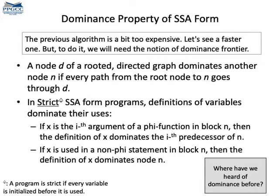A strict program is a program in which every variable is defined before being used. Notice that in this definition, if x is an argument of a phi function, then the definition of x dominates the edge from where that argument comes from, not the basic block where the phi function is.